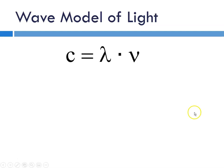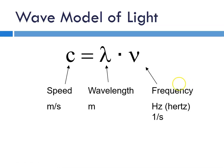According to this wave model of light, the speed of light, C, is equal to lambda times nu. The speed of light in meters per second is equal to the wavelength in meters, that's lambda, times the frequency, that's nu, in cycles per second. And the speed is a constant, 3 times 10 to the eighth meters per second.